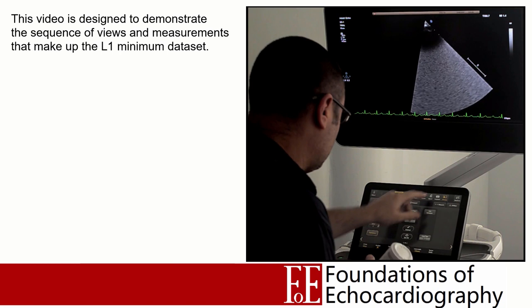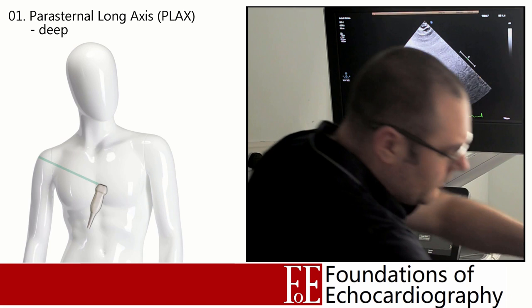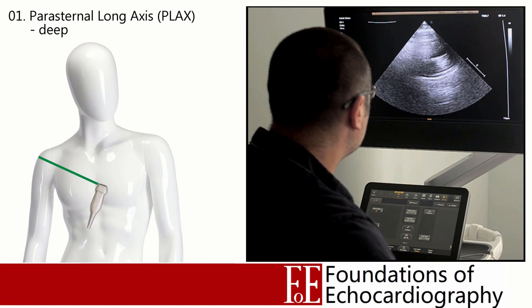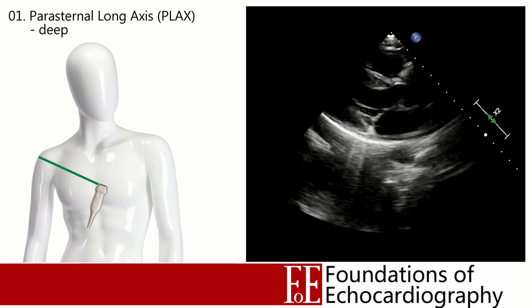Now that we've been introduced to our phased array probe and know how to manipulate it, let's start performing our first scan. I'm going to walk you through the BSE's minimum data set for a Level 1 scan, which has 18 key views and measurements. Start by applying a three-lead ECG to the patient and getting them in the optimal position — ideally lying in the left lateral. We're going to start with the parasternal long axis view, placing the probe around the third or fourth intercostal space just left of the sternum, with the orientation marker pointing towards the patient's right shoulder.